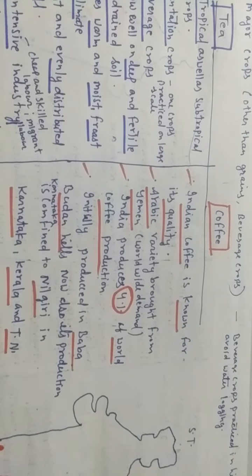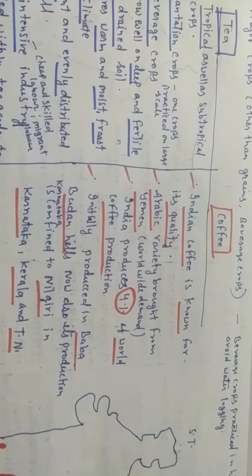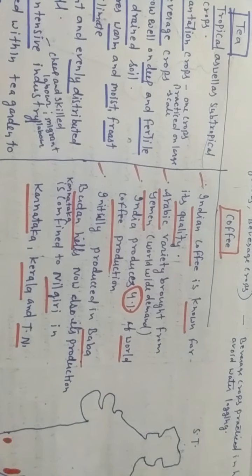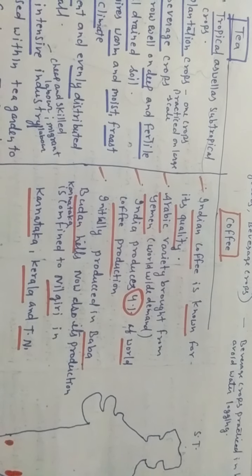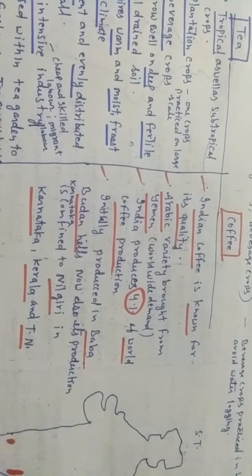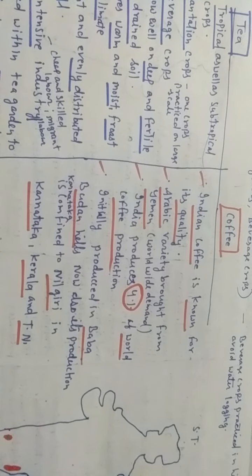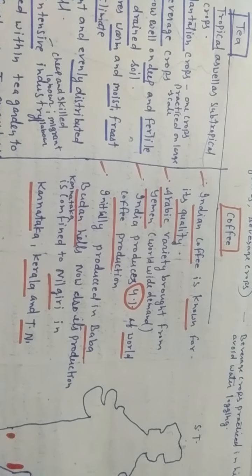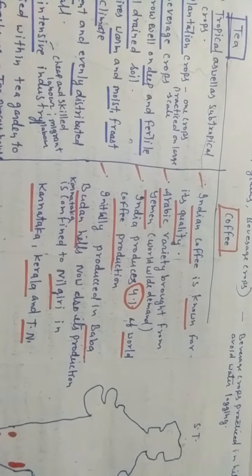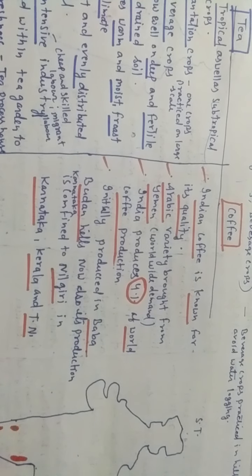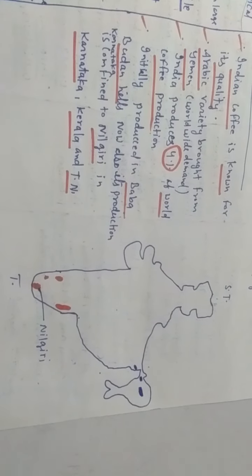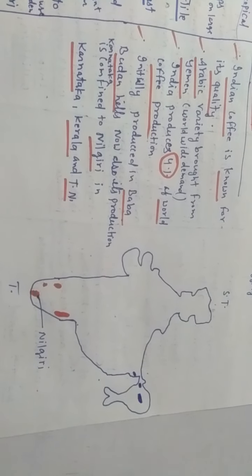Coffee. India is very famous for coffee. Indian coffee is known for its quality. Arabic variety was brought from Yemen when Arabian people came to India. They brought the Arabic type of coffee and it is in worldwide demand. India produces 4% of the coffee of the whole world. Initially it was produced in Baba Budan Hills in the Nilgiri area. It is in Karnataka.